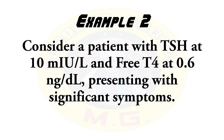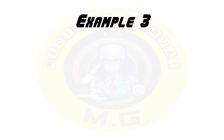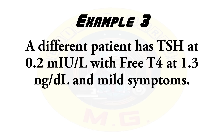Second example: a patient with TSH at 10 and free T4 at 0.6, presenting with significant symptoms. This symptomatic patient with high TSH and low T4 is indicative of overt hypothyroidism. In this case, thyroid hormone replacement therapy should be given.